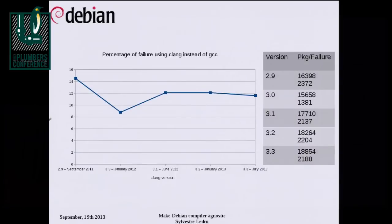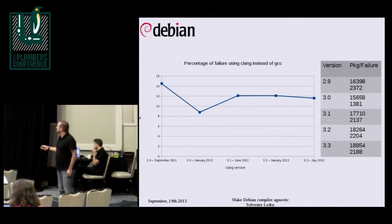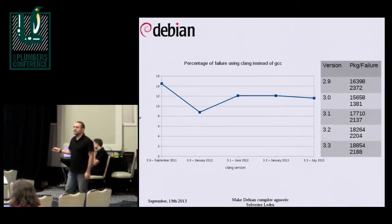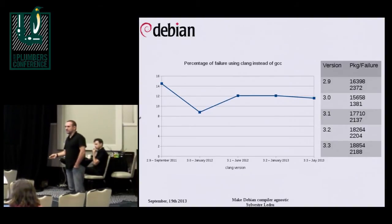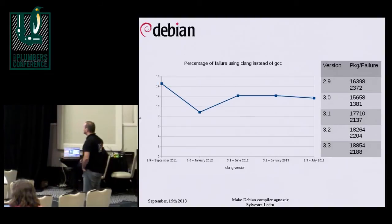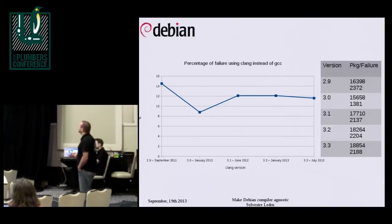Here are the results. With the first version, about three years old, we had 15% of packages failing. There's a decrease at 3.0 — they fixed most of the Clang bugs — and then an increase at 3.1 where they introduced more warnings. Now in the current Debian archive, we have more than 2,000 packages failing, which is about 11%. I'll explain why we have such a high number.